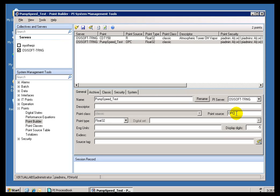That's the whole purpose of this, is to mate these two together, so that when the Interface starts up, it's going to know which points, out of all the millions of points you might have on your PI System, it needs to start scanning.